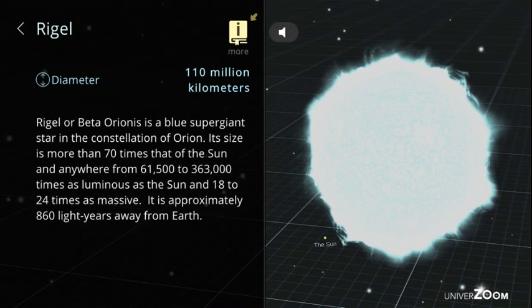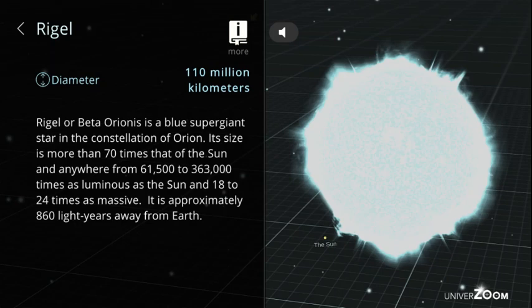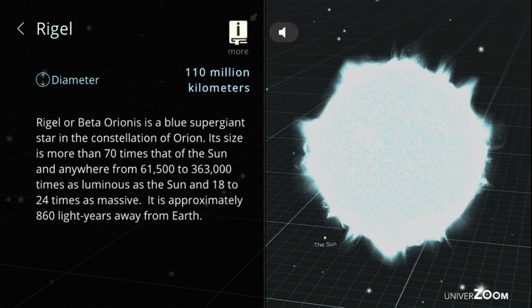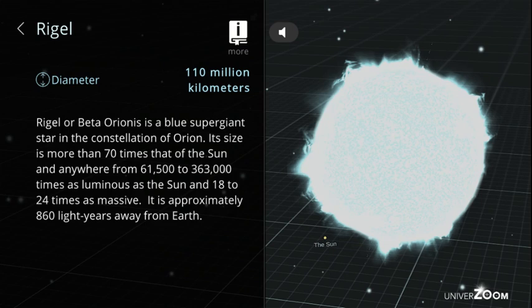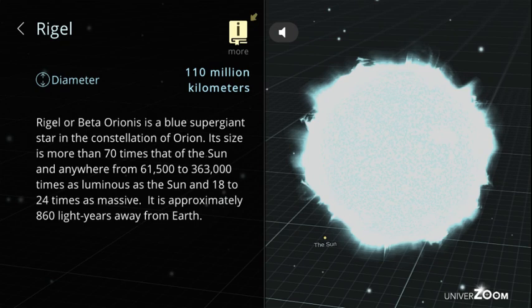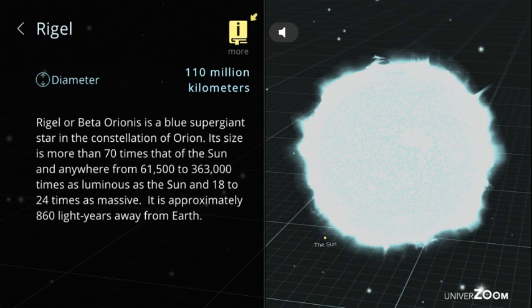Rigel, diameter: 110 million kilometers. Rigel or Beta Orionis is a blue supergiant star in the constellation of Orion. Its size is more than 70 times that of the sun and anywhere from 61,500 to 363,000 times as luminous as the sun and 18 to 24 times as massive. It is approximately 860 light years away from Earth.